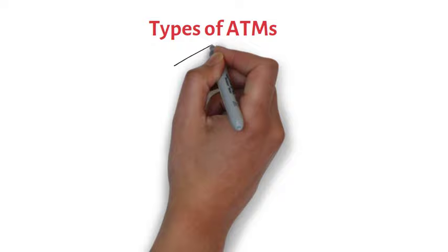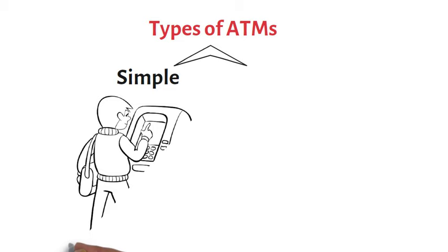ATMs are mainly of two types. One is a simple basic unit, which allows you to withdraw cash, check balance, change the PIN, get mini statements, and receive account updates.